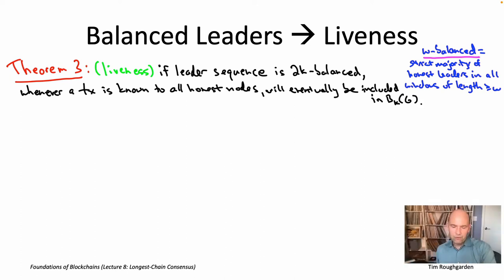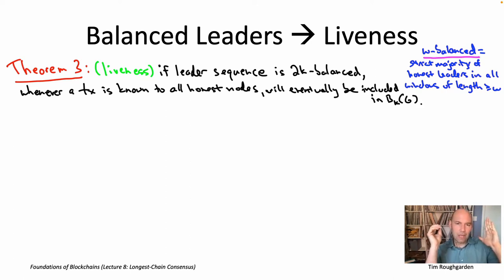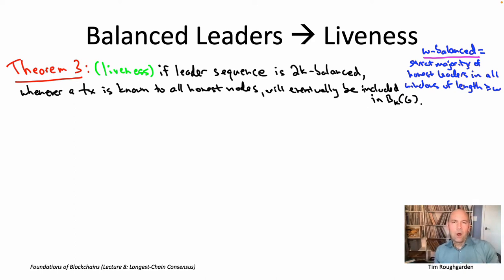As a brief reminder, the balanced condition — W balance — is a property of a sequence of leaders. You have honest leaders, you have Byzantine leaders, a sequence of H's and A's. W balance says that if you look at any window of W or more consecutive leaders, a strict majority of the leaders in that window must be honest. If you choose leaders randomly, you will actually be W balanced for reasonably small W.